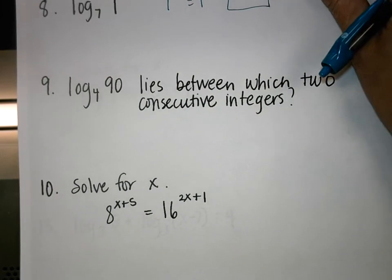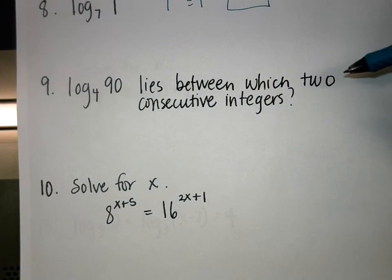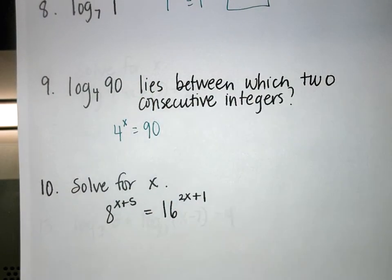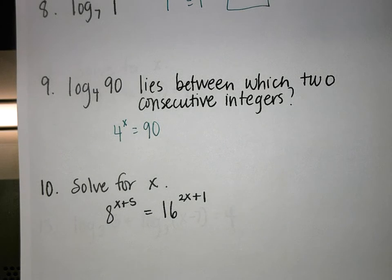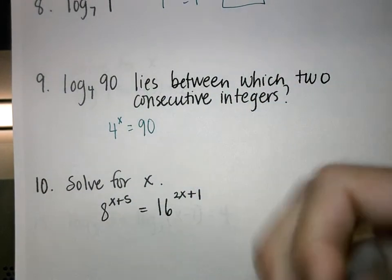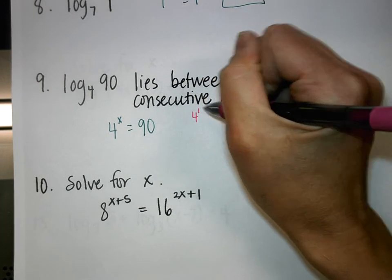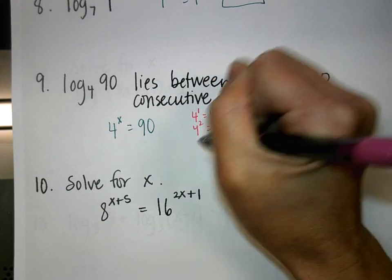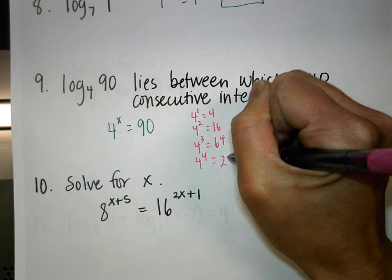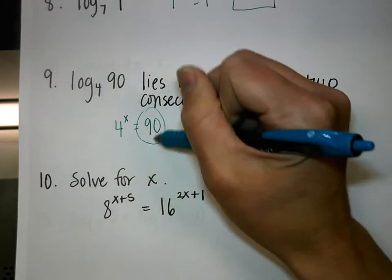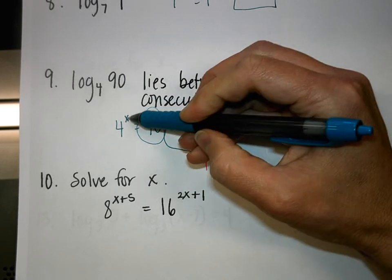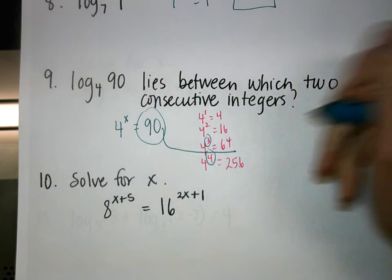Number 9: Log base 4 of 90 lies between which two consecutive integers? We rewrite this as 4 to what power equals 90. We can't change 90 to base 4, so we approximate: 4 to the 1st is 4, 4 squared is 16, 4 cubed is 64, and 4 to the 4th is 256. The value 90 falls between 64 and 256, so X is between 3 and 4.